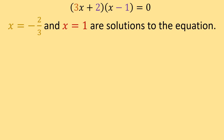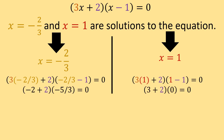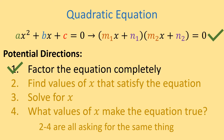We simply plug x equals negative 2 over 3 and x equals 1 into the factored form of the quadratic equation. Continuing to simplify, we eventually get 0 equals 0, which tells us that x equals negative 2 over 3 and x equals 1 are two solutions to the quadratic equation. This process satisfies all of those equivalent directions.